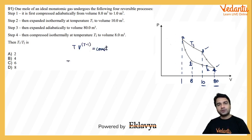So ye process equation hoti hai, so basically is process equation ko use karke aap T1 by T2 likh sakte hai, which is going to be V2 by V1 whole to the power gamma minus 1.